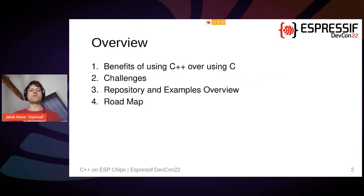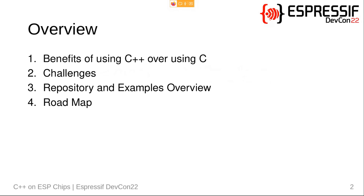This talk will be structured into four parts. First, we will look at a few benefits of using C++ over C and see how users can benefit from them. We will also talk about the challenges when using C++. We will then take a quick view into the current state of C++ inside ESP-IDF and the repositories and examples involved. Finally, we will conclude with a roadmap — what we plan to implement in the near and midterm future.